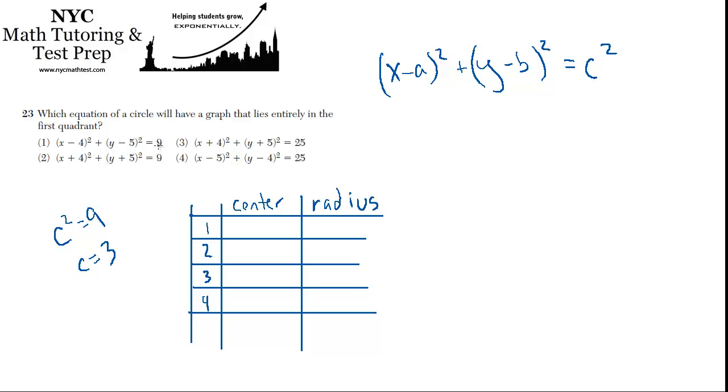Choices 1 and 2 both have radii of 3, and choices 3 and 4 have radii of 5, since the square root of 25 is 5.